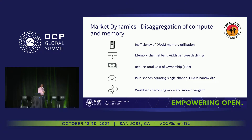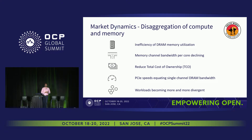The last two reasons: PCIe speeds are approaching single-channel DRAM bandwidth — a Gen 5x4 link roughly equates to that, at least in pure theoretical numbers. And workloads are becoming more divergent, but that doesn't mean you create more types of servers. You want fewer SKUs — as few as possible in a data center environment.